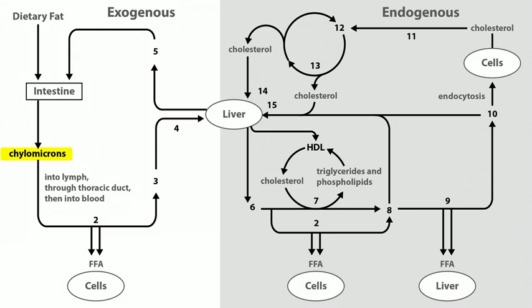Enterocytes can push lipid into lymphatic fluid only with the help of apolipoprotein B48 (ApoB48). Without ApoB48, chylomicrons can't be secreted, resulting in a disorder called abetalipoproteinemia — the absence of beta lipoprotein. Once chylomicrons are in circulation, cells use lipoprotein lipase to pull free fatty acids off the chylomicron. This shrinks the particle into a chylomicron remnant, which then travels to the liver and is absorbed by LRP — lipoprotein receptor-related protein.